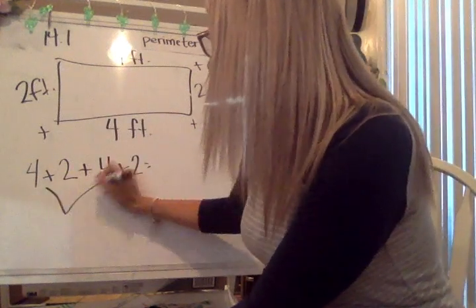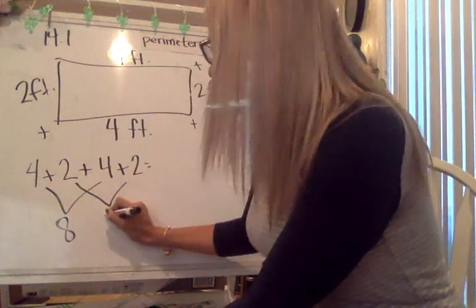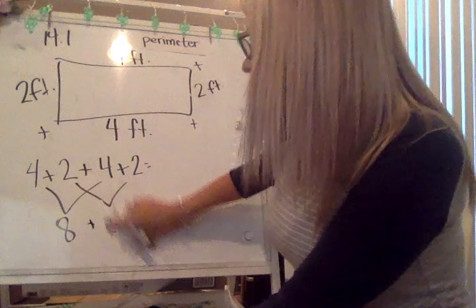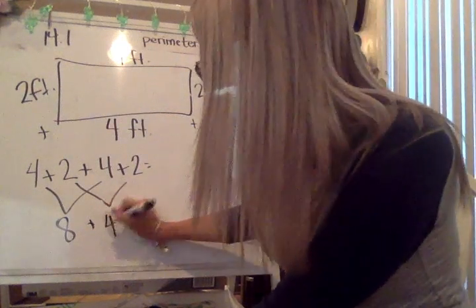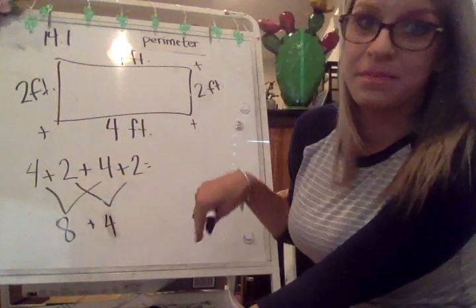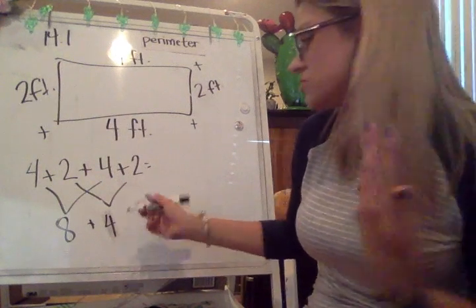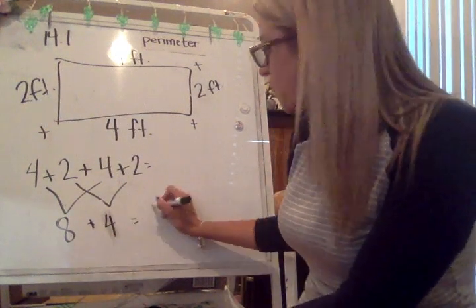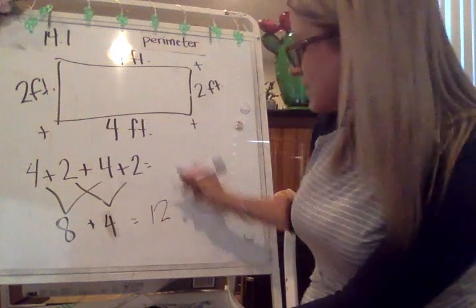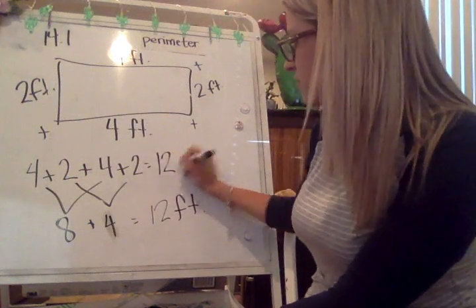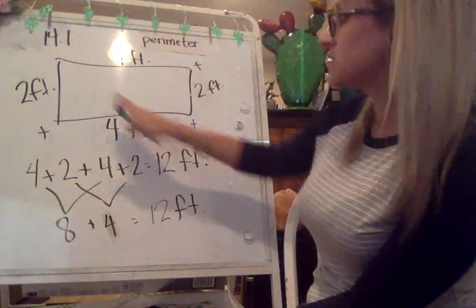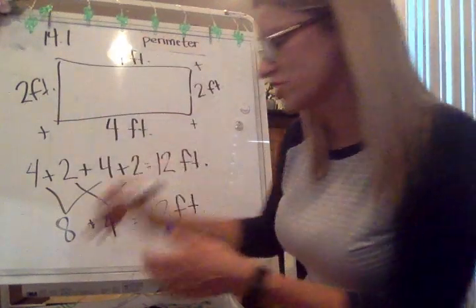So four plus two plus four plus the two. Remember, we're going to look and we'll add our doubles. You might look at this and say, hey, I can do that in my head. I just want you to also have this as an idea that you can use to solve. The eight plus four is 12. And remember it's feet. So we're going to put 12 feet as the total distance around that television.